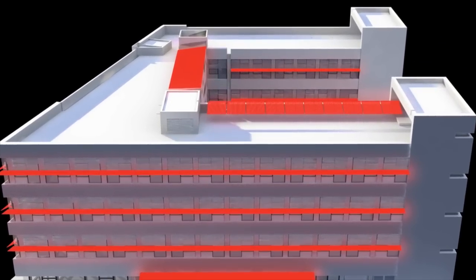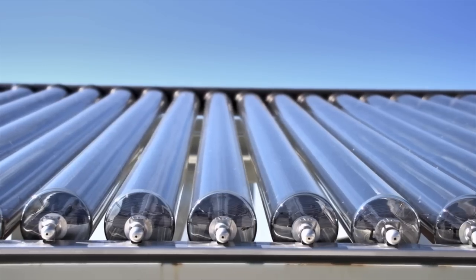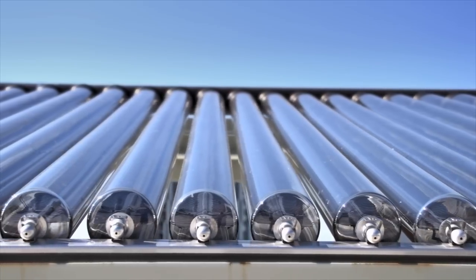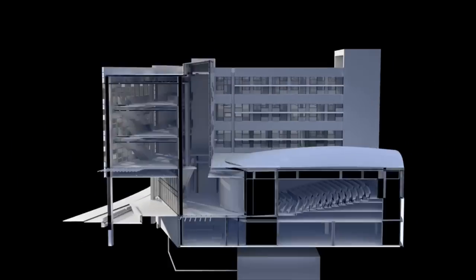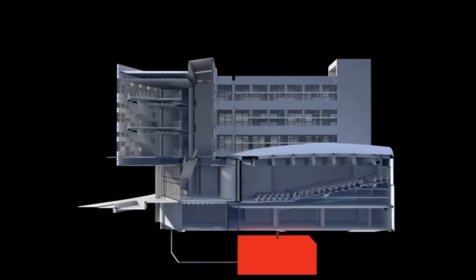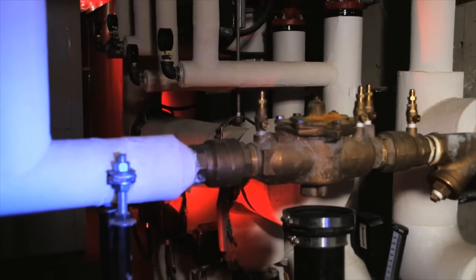The sun is harnessed through solar collectors on the roof that run a refrigerant through vacuum tubes of glass to capture heat for the building's hot water use, as well as with photovoltaic cells that convert sunlight into electricity. A geothermal exchange system uses a heat pump to extract heat from the ground below and then redistributes it into the building.